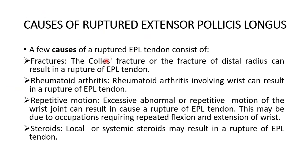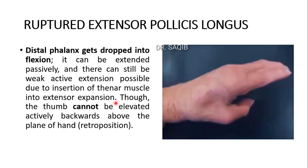The causes of a ruptured extensor pollicis longus include: first, fractures — a Colles' fracture or fracture of the distal radius can result in rupture of the EPL tendon. Rheumatoid arthritis involving the wrist can also result in rupture of the EPL tendon. Repetitive motion — excessive, abnormal, or repetitive motion of the wrist, such as occupations requiring repeated flexion and extension of the wrist, can cause rupture. Finally, use of steroids, either local or systemic, may result in rupture of the EPL tendon.